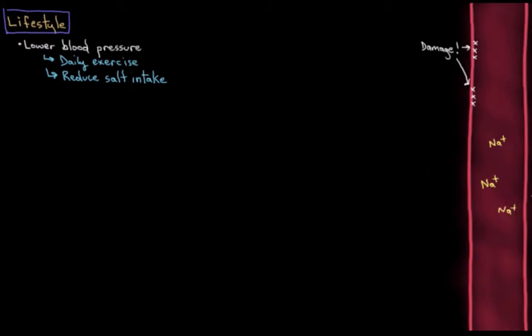With lifestyle, we start with blood pressure control. Lower blood pressure. Because high blood pressure is the biggest risk factor for stroke - it causes damage to your blood vessel walls, which can eventually lead to a stroke. In terms of lifestyle, there are a few ways to reduce your blood pressure. For example, daily exercise, which strengthens your cardiovascular system and lowers your blood pressure that way. And reducing your salt intake, because lots of salt in your diet can cause you to retain more water in your blood vessels, and by default, that increases your blood pressure.